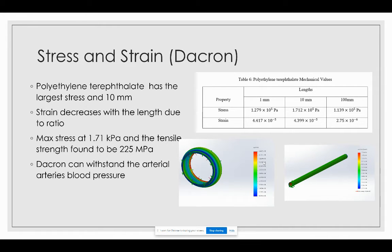For Dacron, the largest stress again occurs at 10 millimeters and strain decreases with length. The maximum stress was 1.78 kilopascals, and the tensile strength was found to be 225 megapascals. Dacron will easily be able to withstand the radial artery's blood pressure.